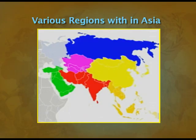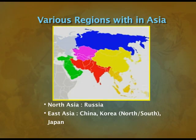They are so different from each other that it would be difficult to categorize all of them under a few categories. Now, looking at this map identifying various regions within Asia: the colour blue indicates North Asia, which primarily includes Russia — the biggest country in the world. The yellow region indicates East Asia, which includes China, Korea — both North Korea and South Korea — and Japan.